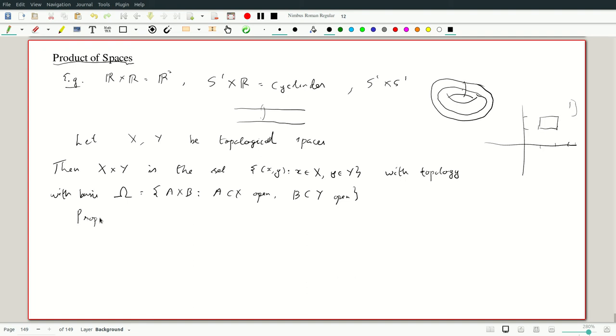The proposition here is that this is indeed a basis. To be a basis, the union has to be everything, which is easy. The only thing we have to check is really that the intersection of finite collection of such open sets is open.